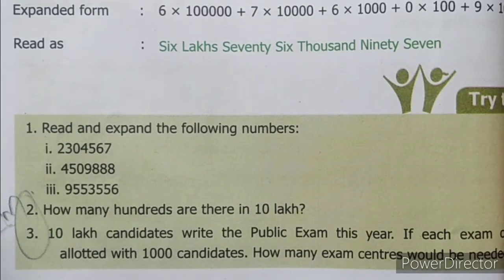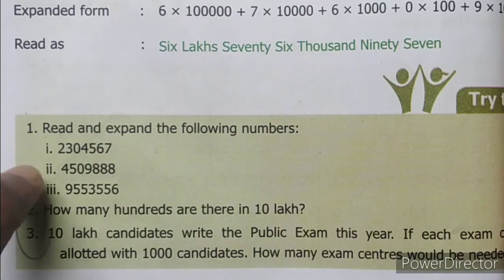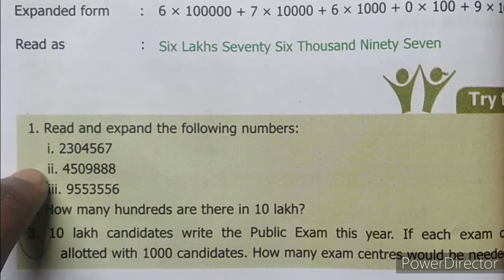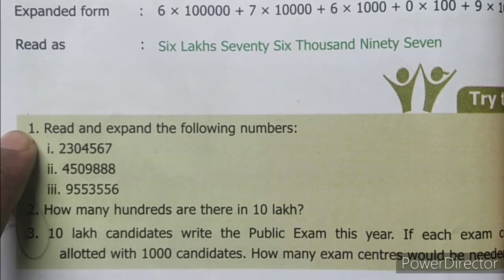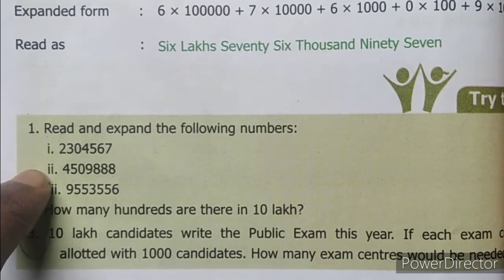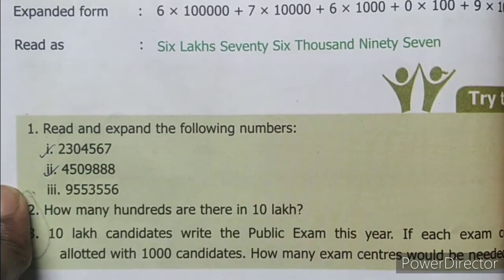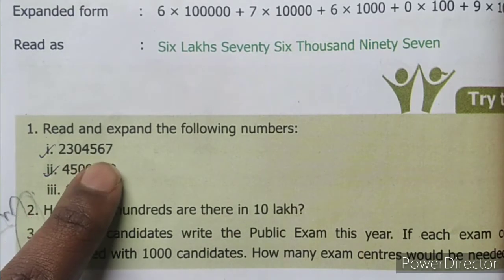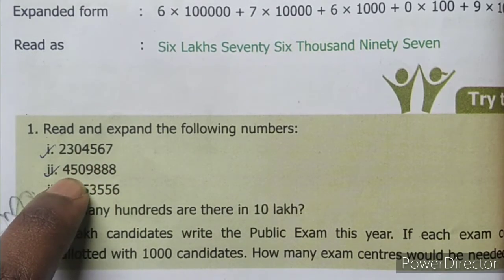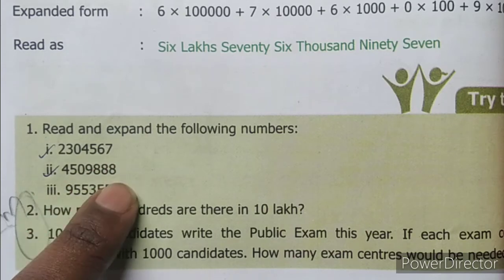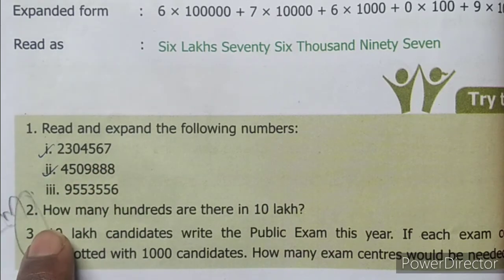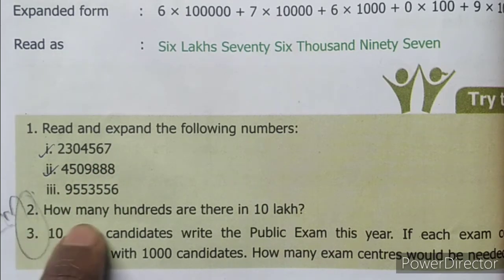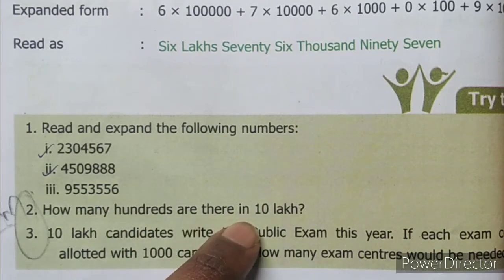Okay, the same method we will use to solve the first and second sums in page number six. Try this: first sum is 2,304,567 and second is 4,509,888. Next, listen to the second sum: how many hundreds are there in 10 lakh?